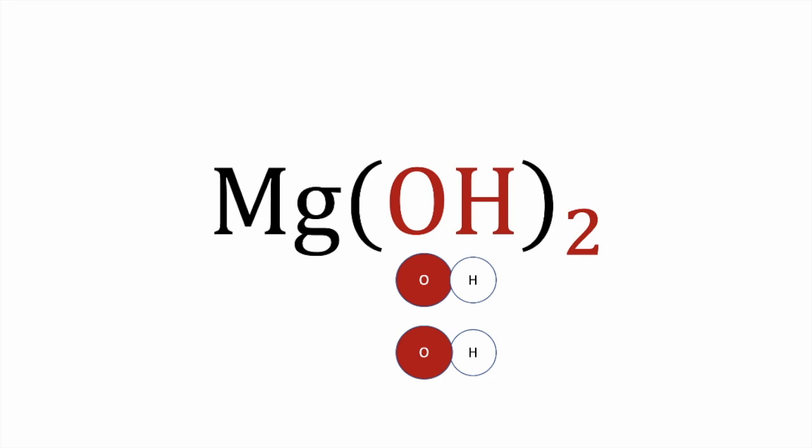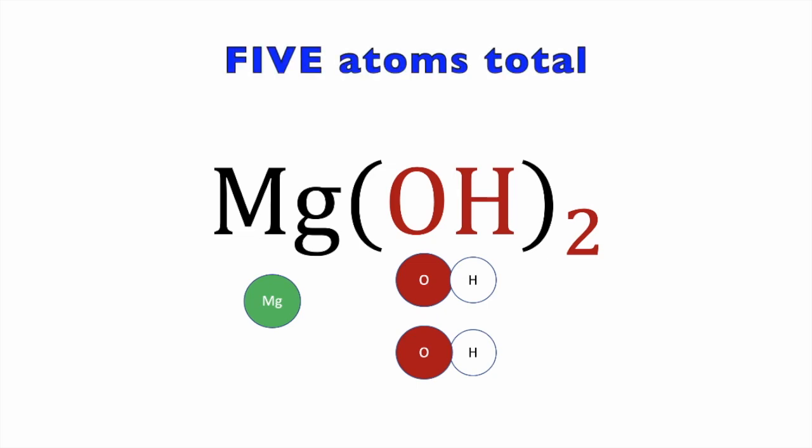In the magnesium hydroxide example, we have one magnesium because there is no subscript next to the magnesium. The subscript to the right of the parentheses tells us we have two groups of these bonded OH atoms — we call this a hydroxyl group. Each hydroxyl group has two atoms in it, so two groups gives us four atoms total from both groups. Adding the magnesium, we get five atoms total.